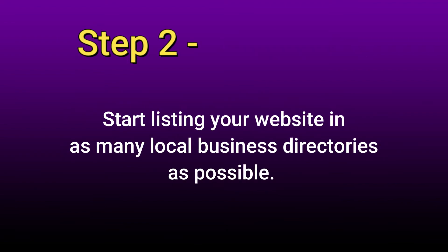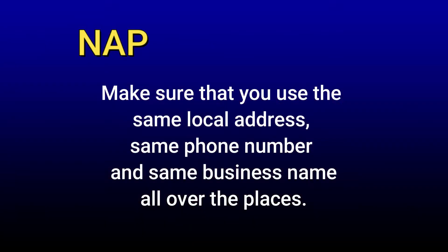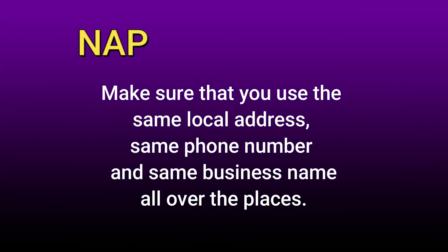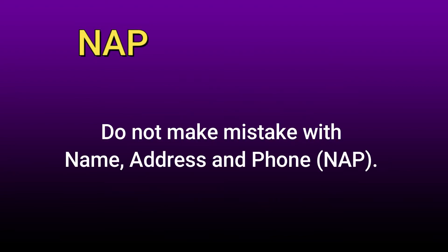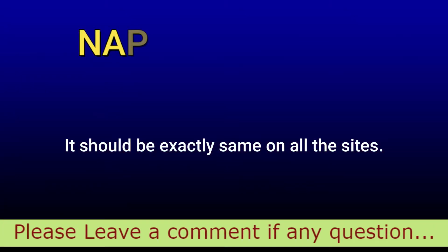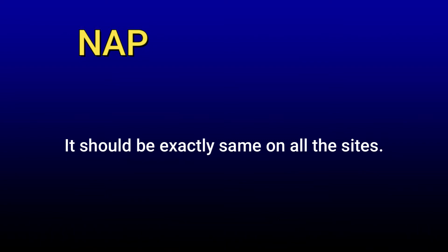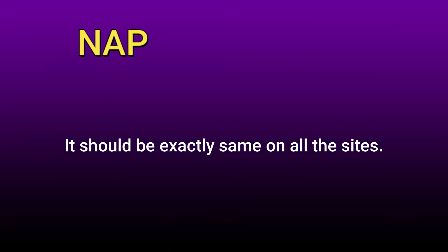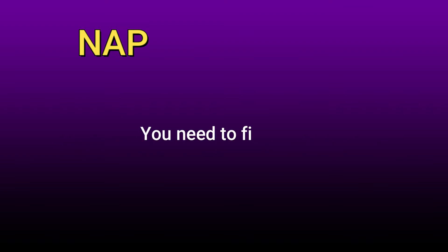The second step: start listing your website in as many local business directories as possible. Make sure that you are going to use the same local address, the same phone number, and the same business name everywhere. Do not make a mistake with name, address, and phone — that is called NAP. It should be exactly the same on all the business directories. Refer to your Google My Business account and use the same data on all directories.